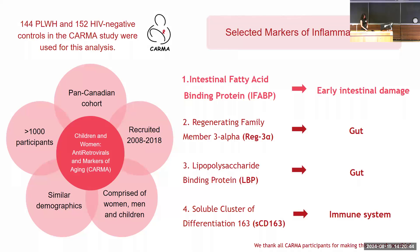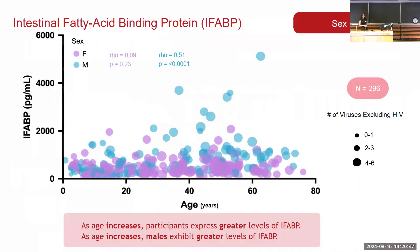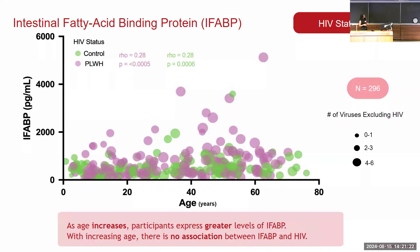Looking at results for IFAB, using a multivariable bubble plot showing the association between IFAB levels and age with number of non-HIV viruses: each circle is a participant, and the size indicates the number of non-HIV viruses. We found that as age increases, participants exhibit greater levels of inflammation. We also determined that males tend to exhibit greater levels of inflammation. Looking at HIV status, we also found — very surprisingly — that there is no association between people living with HIV and IFAB levels.